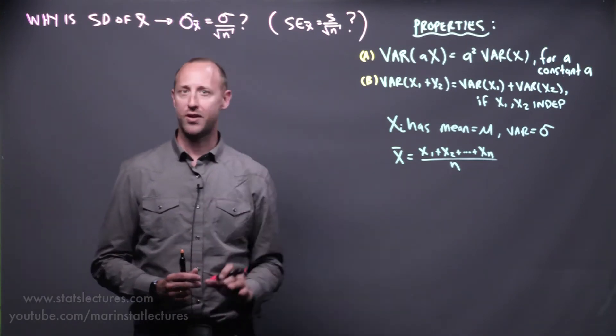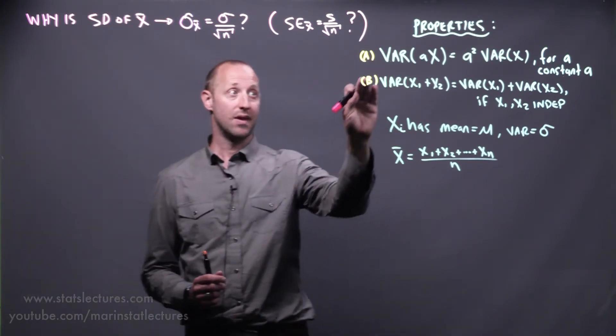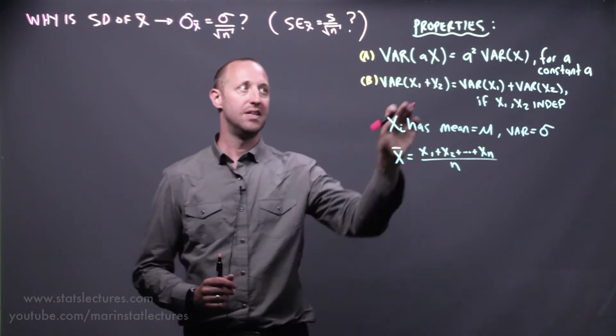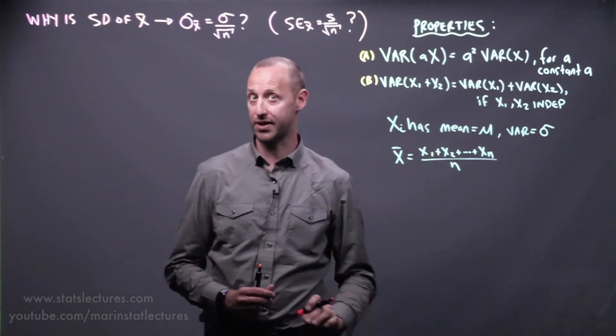To build our way up there we're going to make use of a few properties. The first is that the variance of a times x, a being any constant, is equal to a squared times the variance of x.